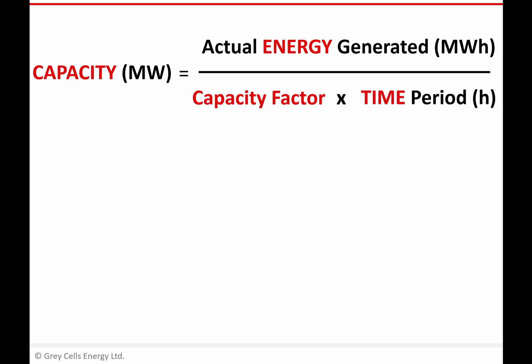And obviously, if energy is the same in both cases, but capacity factor is lower for solar than for coal, for example, you'll need to build a higher capacity of solar to replace a certain capacity of coal. You'll need to build more megawatts to produce the same number of megawatt hours if the capacity factor is lower.